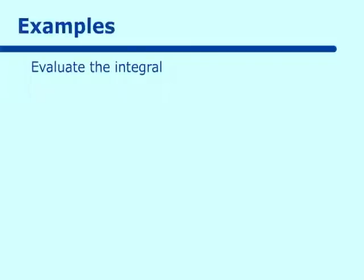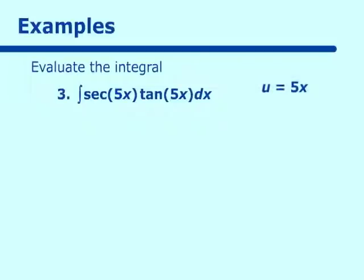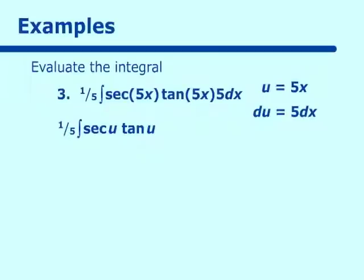Evaluate the integral of secant 5x tan 5x dx. That looks like secant x tan x, and we know the antiderivative of secant x tan x is secant x. So u is 5x, which makes du equal to 5 dx. We substitute a 5 in and compensate with a 1 fifth out front, giving us 1 fifth integral of secant u tan u du. The antiderivative of secant tan is secant, so we get 1 fifth secant u plus c, and substituting back: 1 fifth secant of 5x plus c.